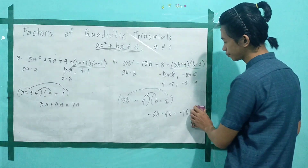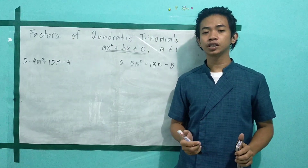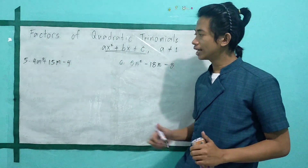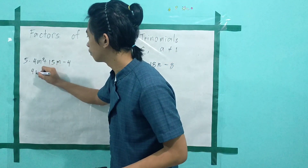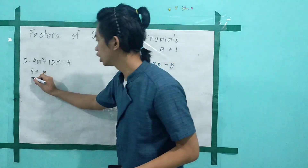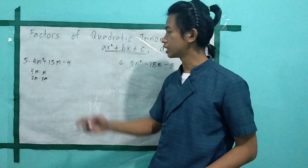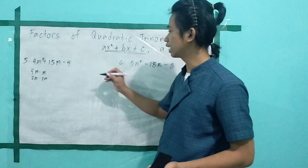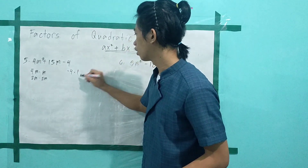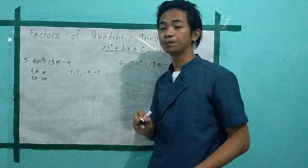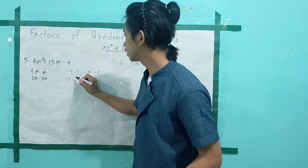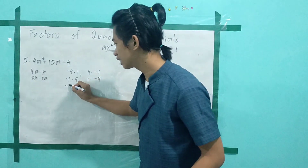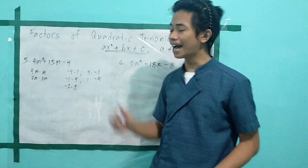Let's proceed to problem number 5. We have 4m squared plus 15m minus 4. The factors of a are 4m times m, or 2m times 2m. Since c is negative, the factors of c will be one positive and one negative: negative 4 times 1, positive 4 times negative 1, negative 1 times 4, positive 1 times negative 4, or negative 2 times 2.